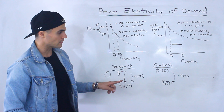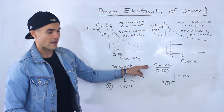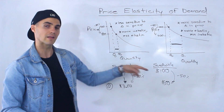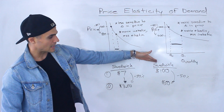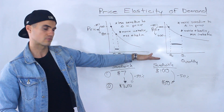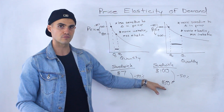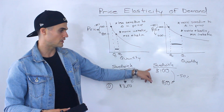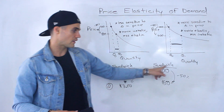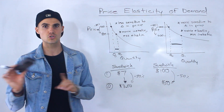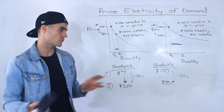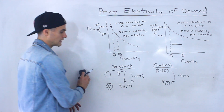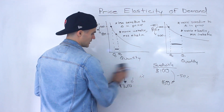There are also other factors that can affect elasticity. For example, the price relative to your income is one factor. But let's say that sandwich was the only source of food around — no other substitutes available. Then even if the price went from $7 to $100, you'd probably still buy it because there's nothing else. So the availability of substitutes is another factor that can affect elasticity, and we'll talk about those other factors later on in the section.